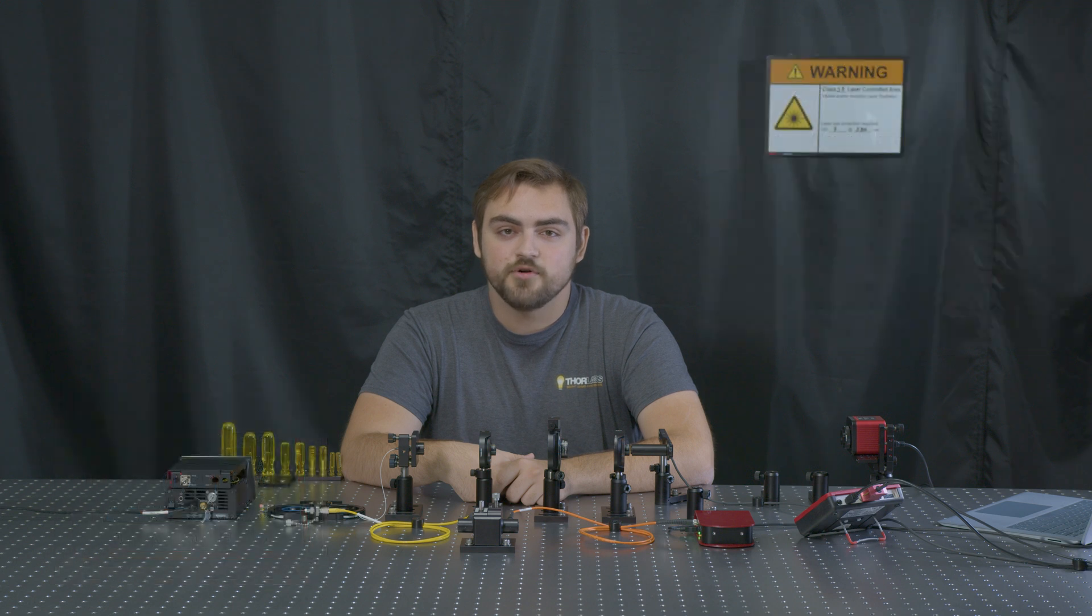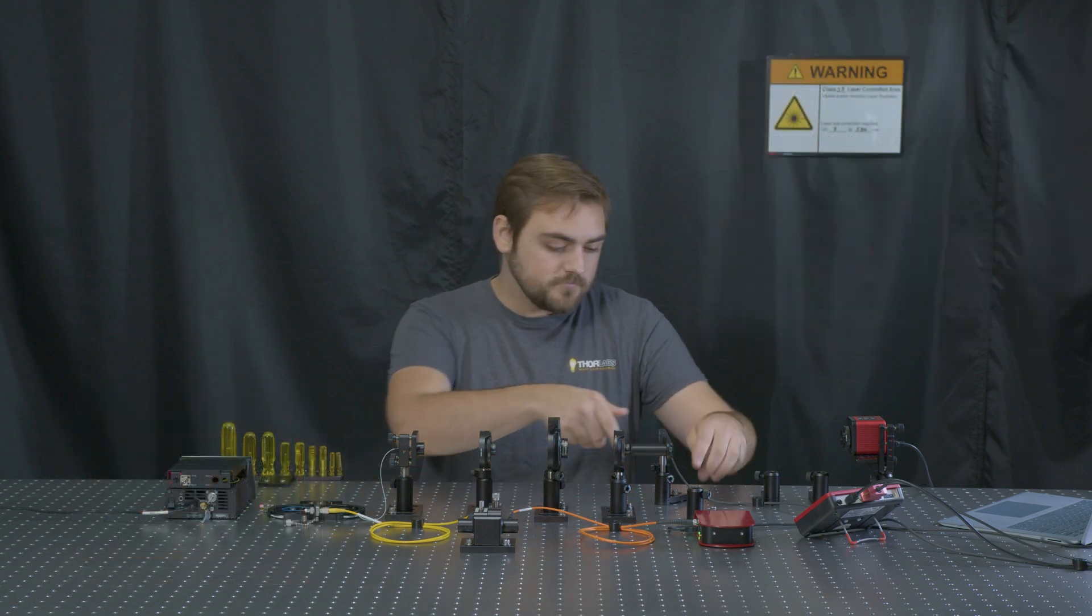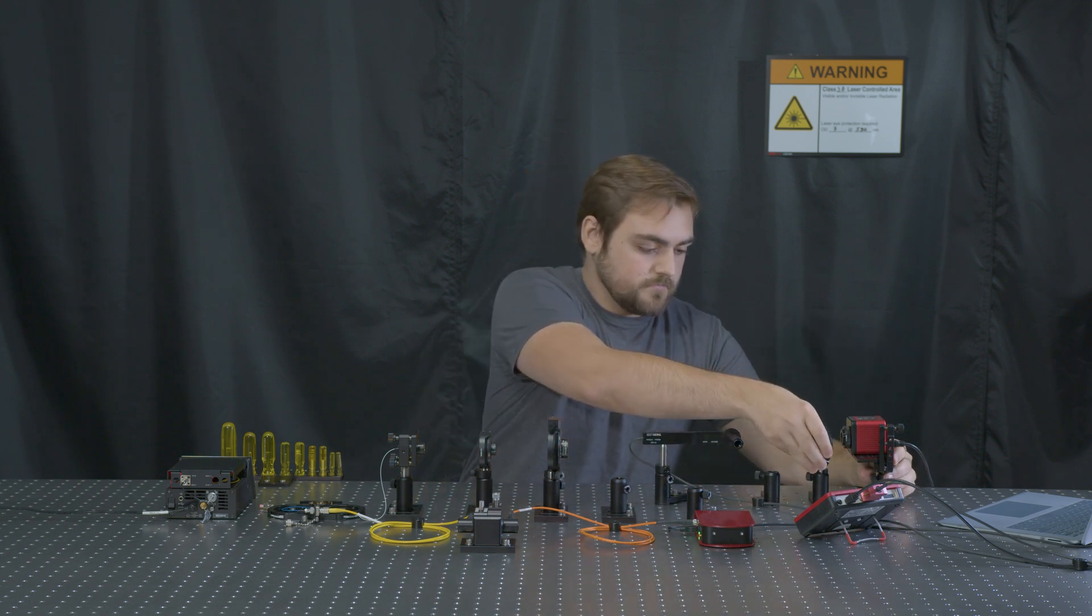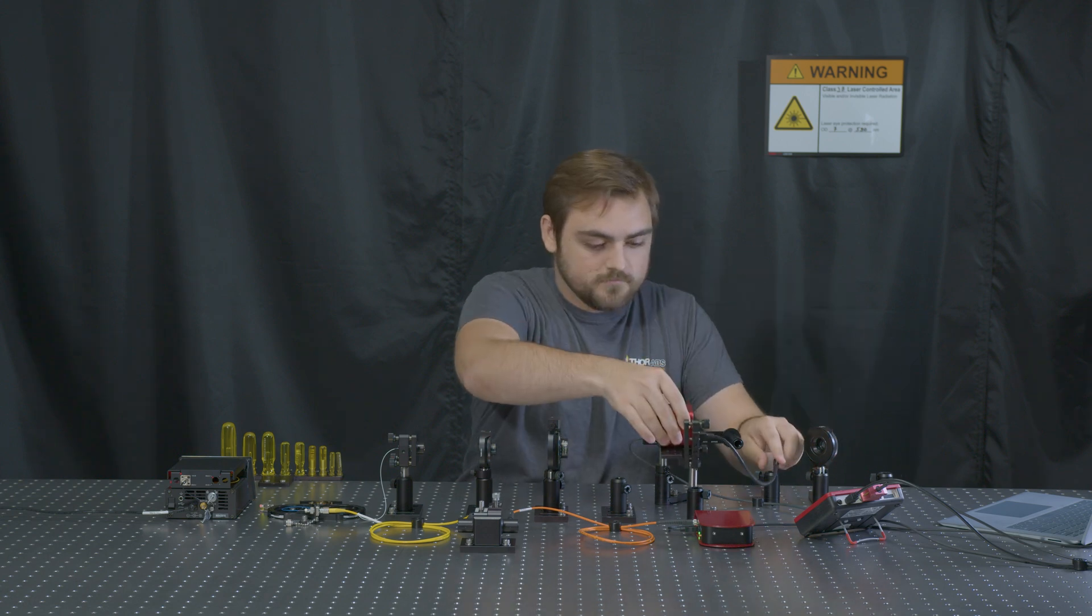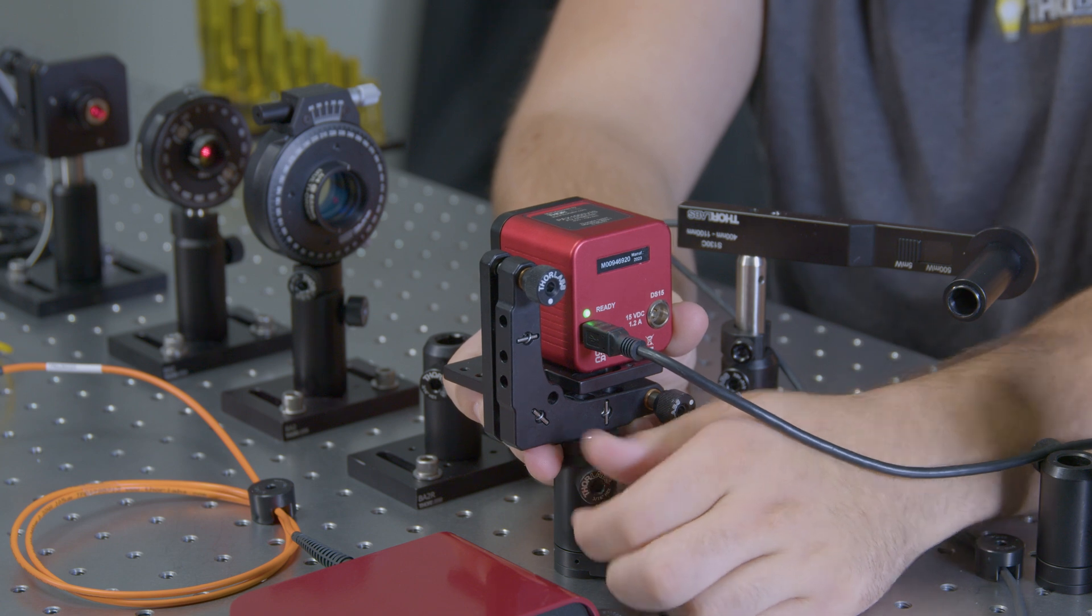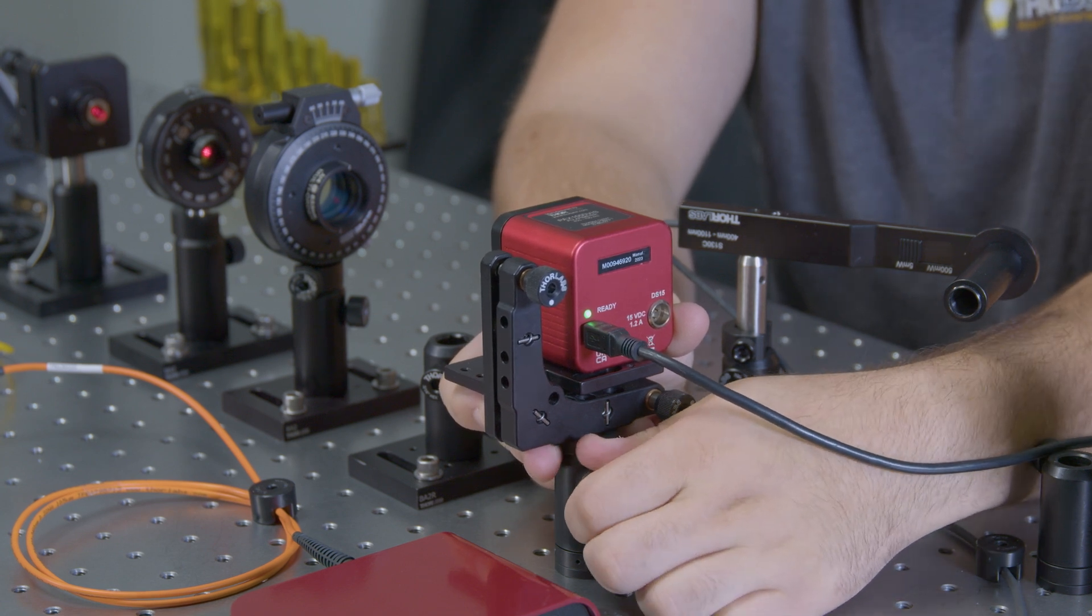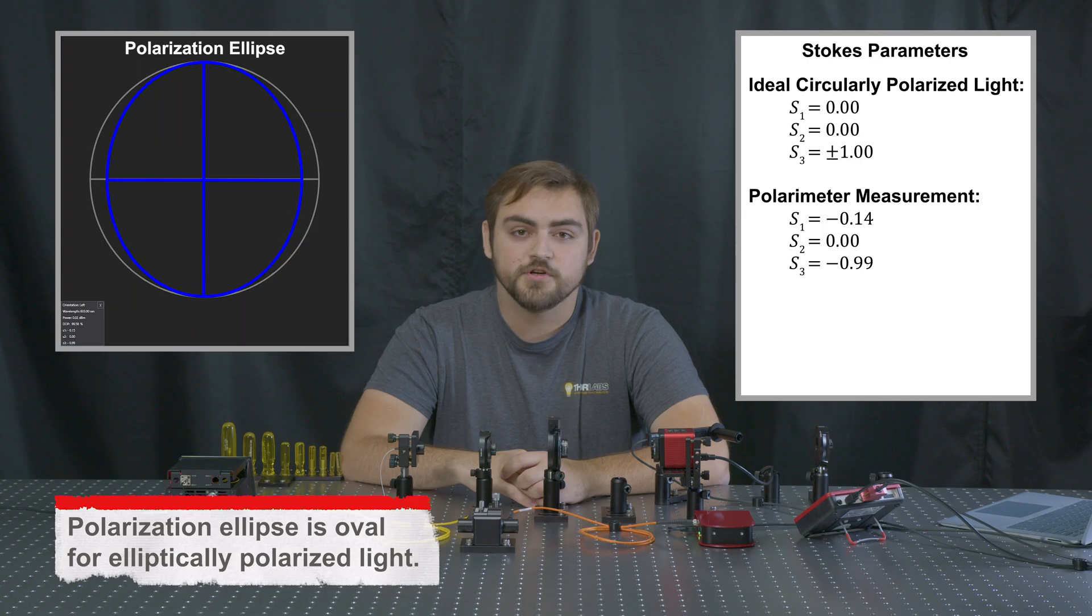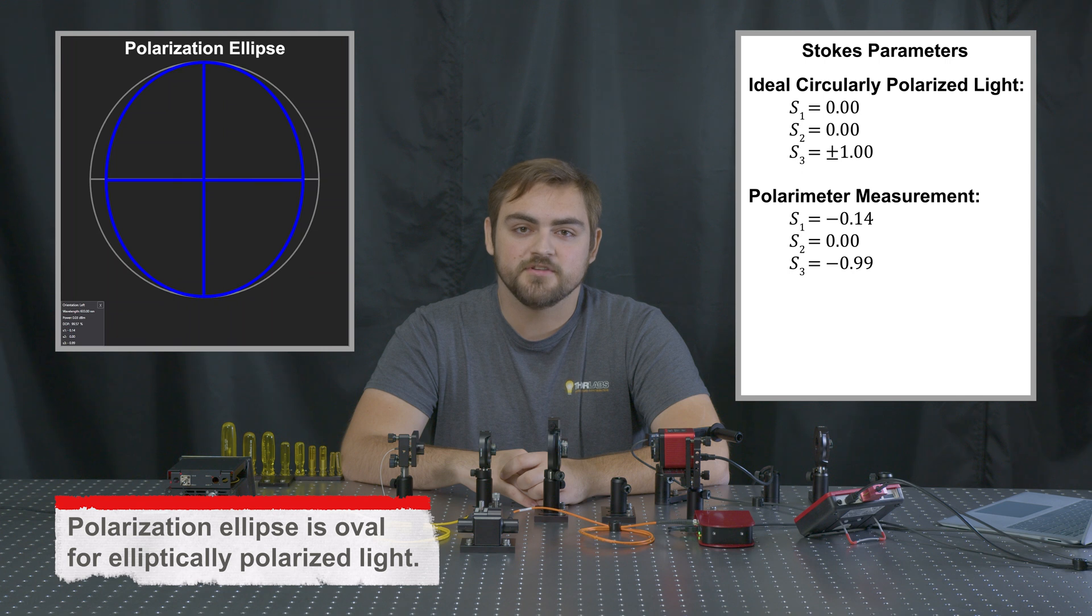To verify this, we can swap in our polarimeter for our analyzing polarizer. For a true quarter wave retardance, we would expect to see circular polarization measured by the polarimeter, as the wave plate's optical axes are at 45 degrees relative to the polarizer's axis. In this case though, we can see we're measuring an elliptical state.